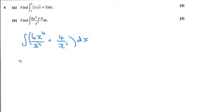ready to be integrated. We're going to need to cancel these x squares down, so we're going to get 6x squared, and we're going to rewrite this in index form as well, so that's going to be 4x to the negative 2.